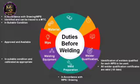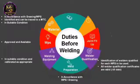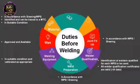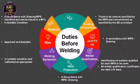Welder qualification: it is the duty of the welding inspector to check whether the welder is qualified for the joint to be welded and that welder certificates are valid and up to date. Joint fit-up and joint design should also be according to the WPS or drawing. The number and size of tack welds should be according to code and project specification.